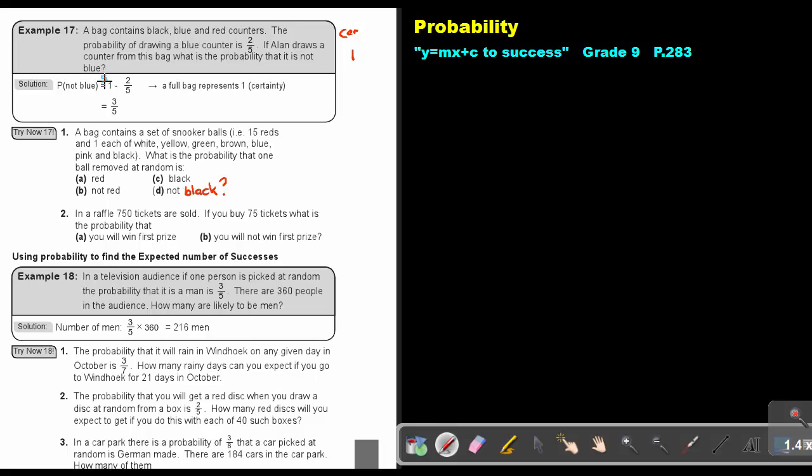So if this denominator is 5, I can say 5 over 5. If this is 4, I can say 4 over 4. And then it's easy to see that it's going to be 3 over 5, my answer.